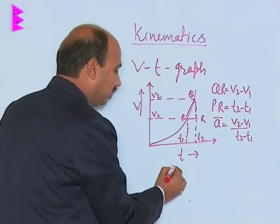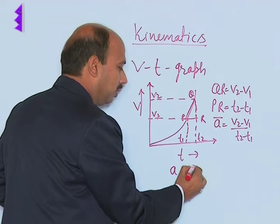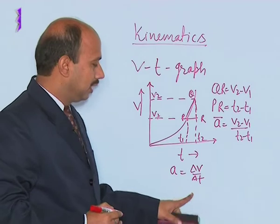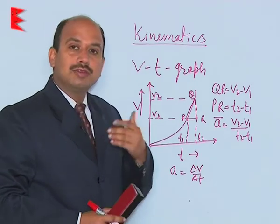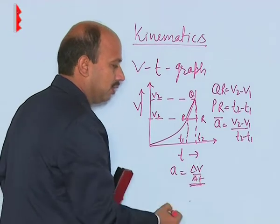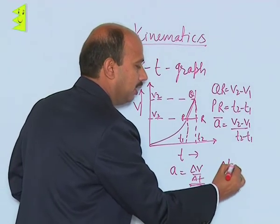If you take A is equal to delta V upon delta t, change in velocity divided by change in time. Now we can go for instantaneous acceleration. If you just take this time interval, write delta t tends to 0.